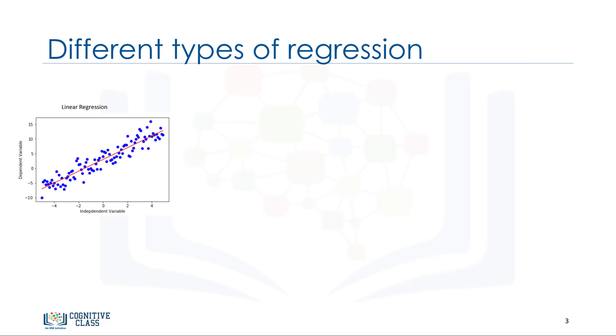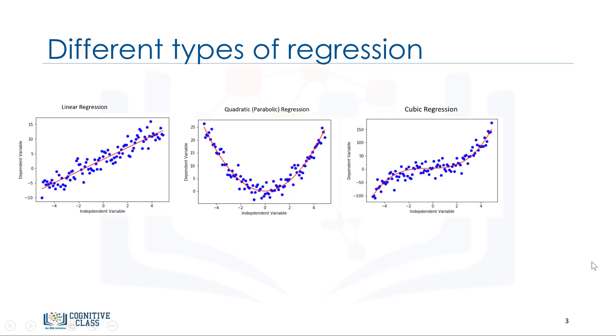In fact, many different regressions exist that can be used to fit whatever the data set looks like. You can see a quadratic and cubic regression lines here. And it can go on and on to infinite degrees. In essence, we can call all of these polynomial regression, where the relationship between the independent variable x and the dependent variable y is modeled as an nth degree polynomial in x. With many types of regression to choose from, there's a good chance that one will fit your data set well. Remember, it's important to pick a regression that fits the data the best.